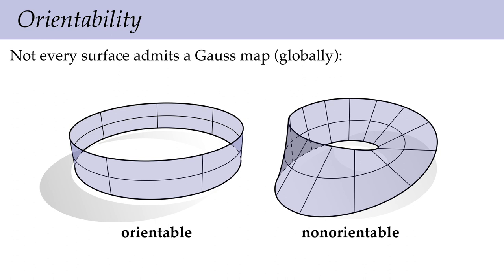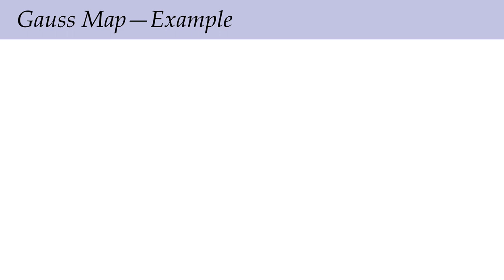The Gauss map really only exists globally on orientable surfaces. You could use this as a way of defining what it means for a surface to be non-orientable: a surface is orientable only if we can assign a globally continuous Gauss map. On a non-orientable surface, we can still assign a Gauss map in any local neighborhood — any small disk-like neighborhood — but we can't do it globally.